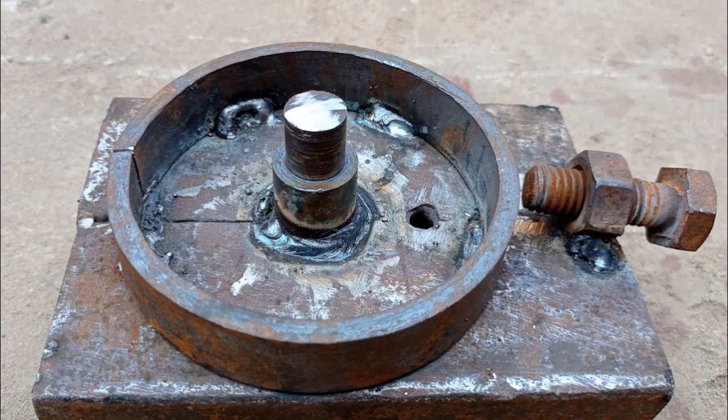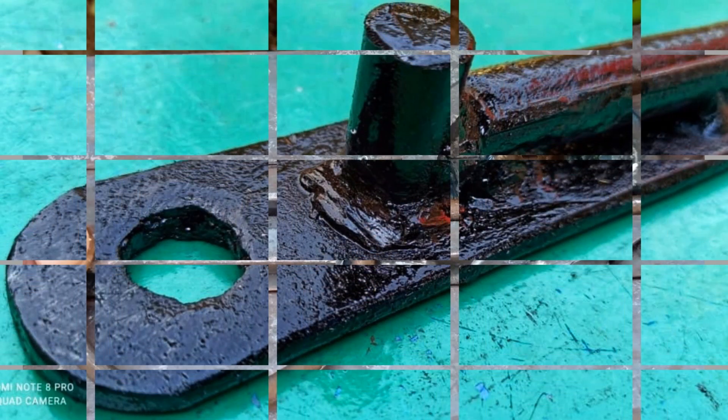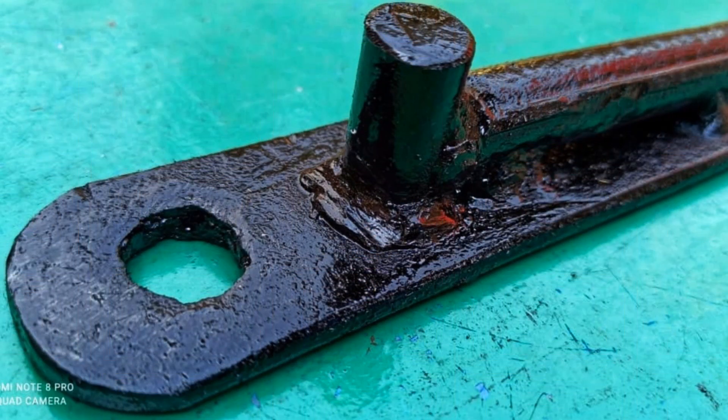Before steel came into general use during the later part of the 19th century, curved structures were frequently constructed from iron which is cast in liquid form in a curved profile.